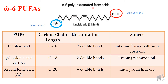In polyunsaturated fatty acids there will be more than one double bond. So in linoleic acid, which is 18:2, it has two double bonds. 18:2 indicates 18 is the carbon chain length, two is the number of double bonds, and six is the position of the first double bond.